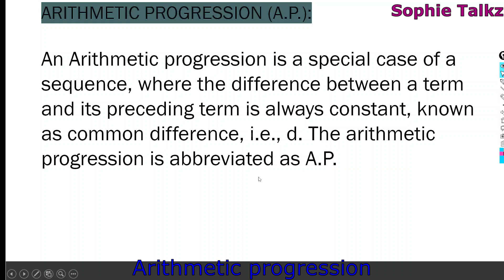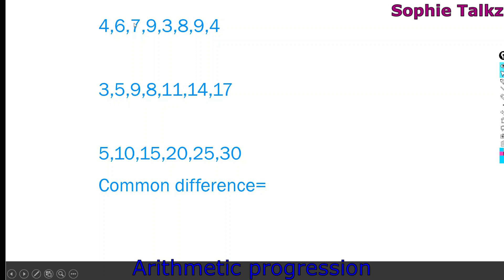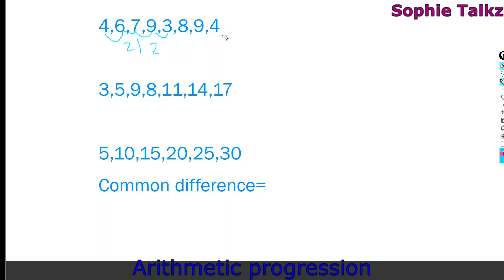There is a constant difference in an AP, but here we have the sequence 4, 6, 7, 9, 3, 8, 9, 4. The difference between 4 and 6 is 2; between 6 and 7 is 1; between 7 and 9 is 2; between 9 and 3 is minus 6; between 8 and 3 is 5; between 9 and 8 is 1; and between 4 and 9 is minus 5. The differences are all different, so this is not a common difference — therefore this sequence is not an Arithmetic Progression.